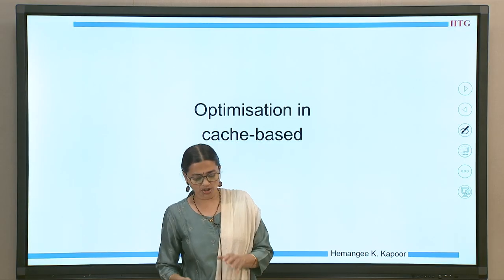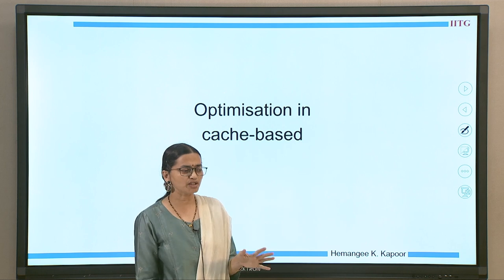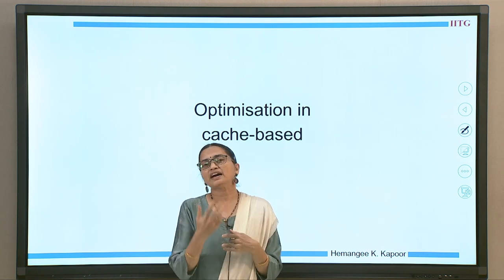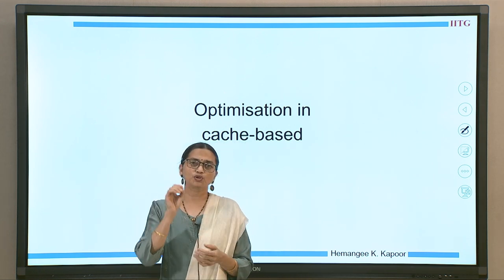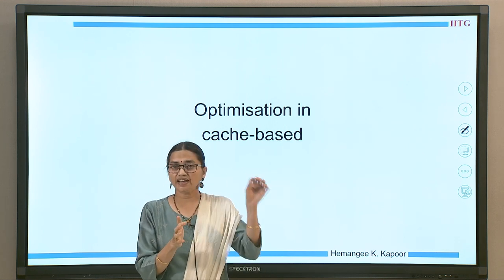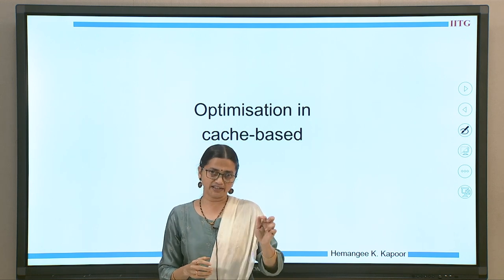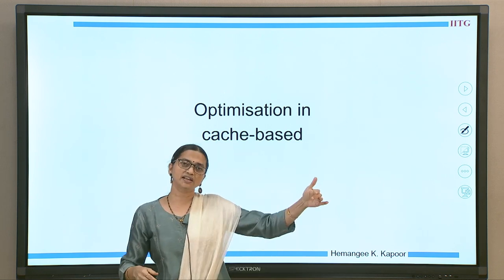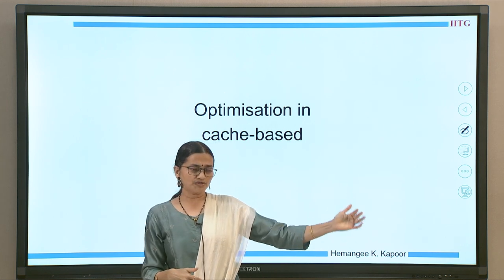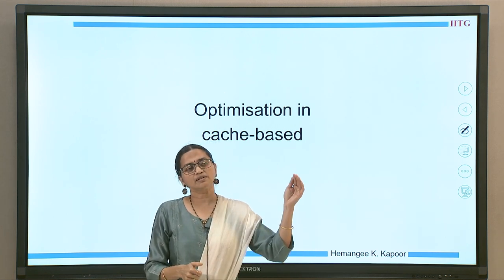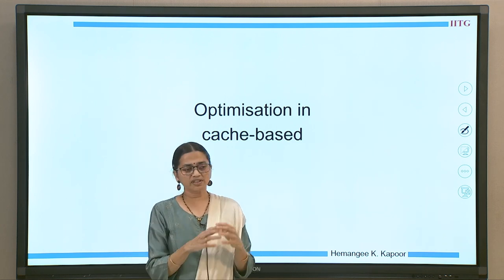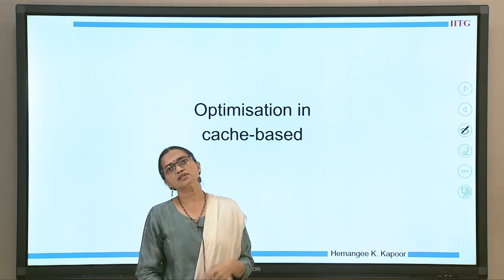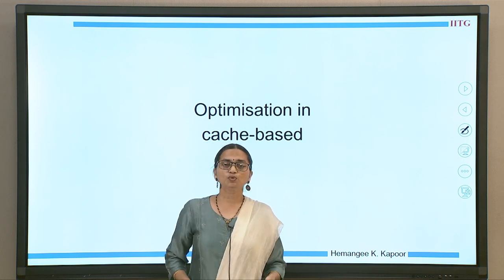Now for cache-based directory optimizations. In a cache-based system, the directory uses a distributed linked list across nodes for sharers. When sending an invalidation for a particular block, you go to the home node, get the identity of the head sharer (S1), invalidate it, get the identity of the next sharer (S2), and so on — traversing the linked list and collecting acknowledgements back. We apply the same three protocol methods: strict request response, intervention forwarding, and reply forwarding.